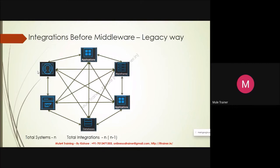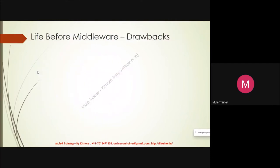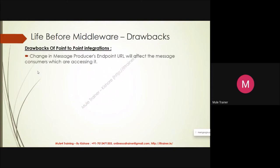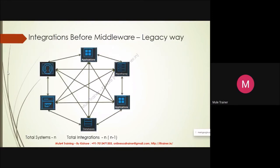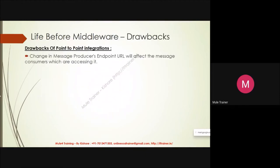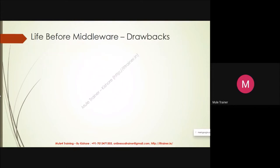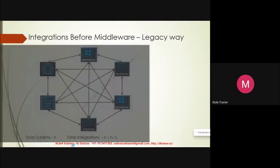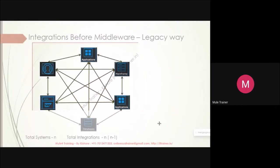These are called point-to-point integrations — the arrow starts at one point and ends at another. The drawbacks are: if the message producer's URL gets changed, it will affect all the message consumers accessing it. If the system address, host, or anything changes in one system, it gives impact on all other systems — one, two, three, four, five — all systems accessing it.